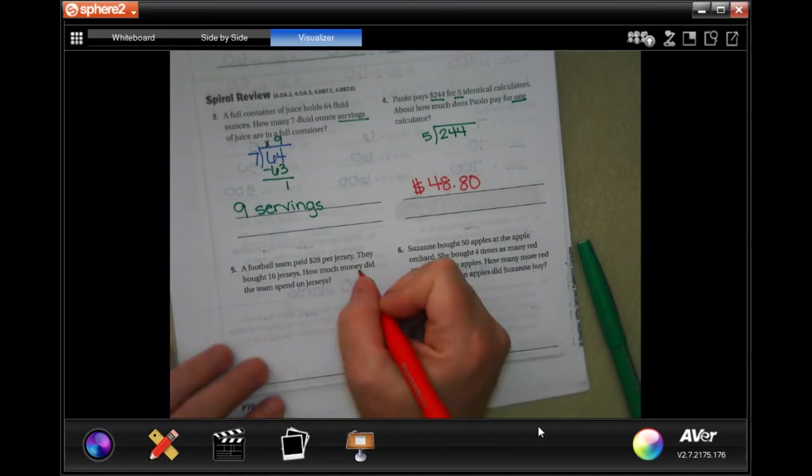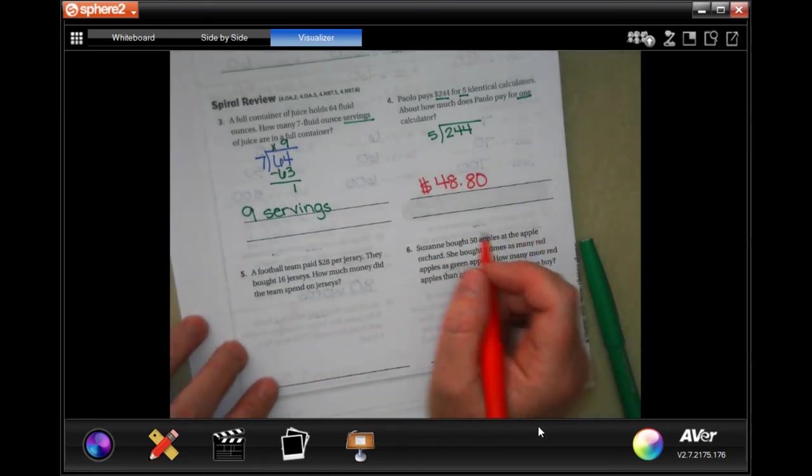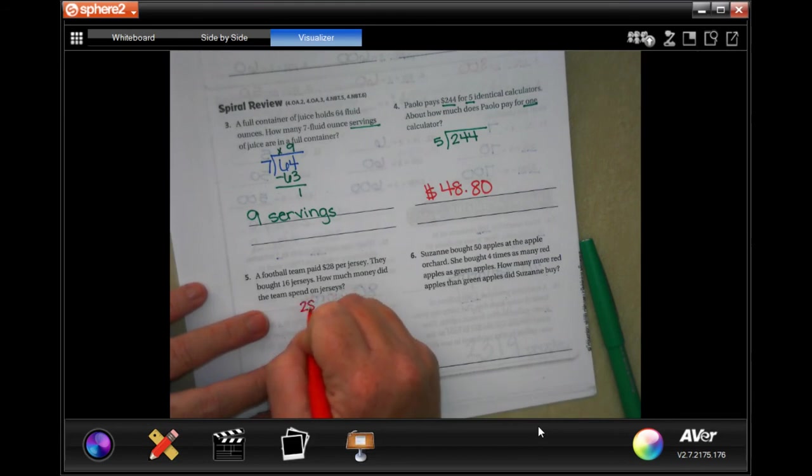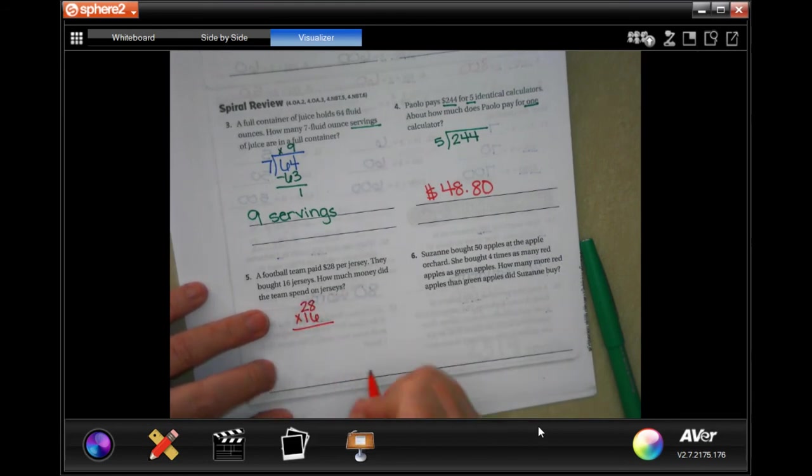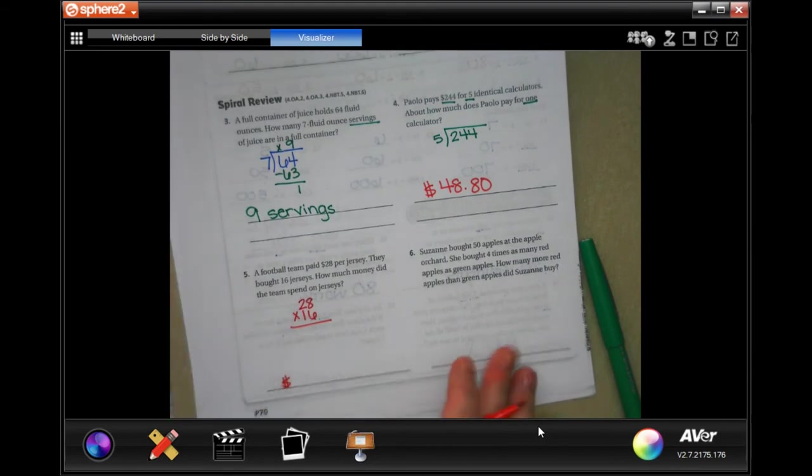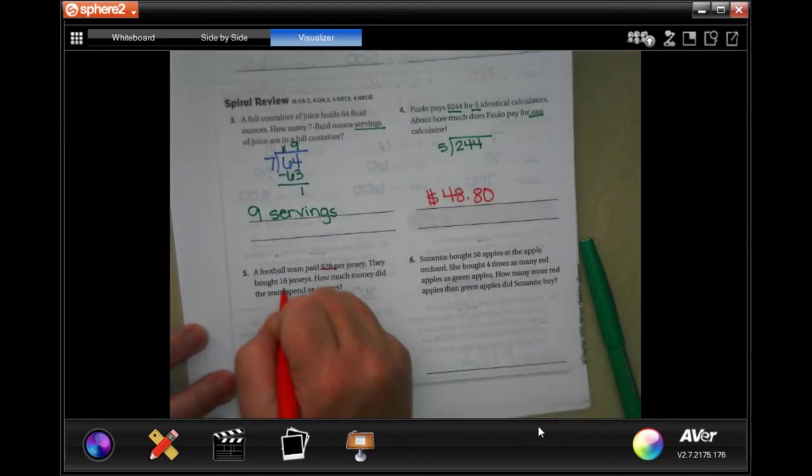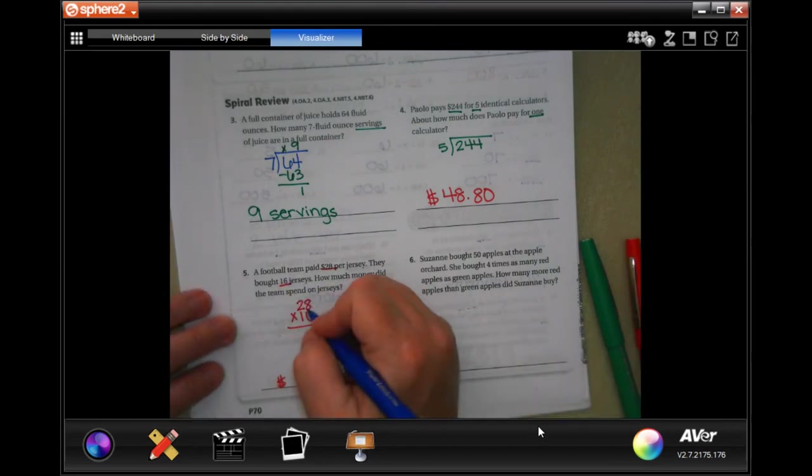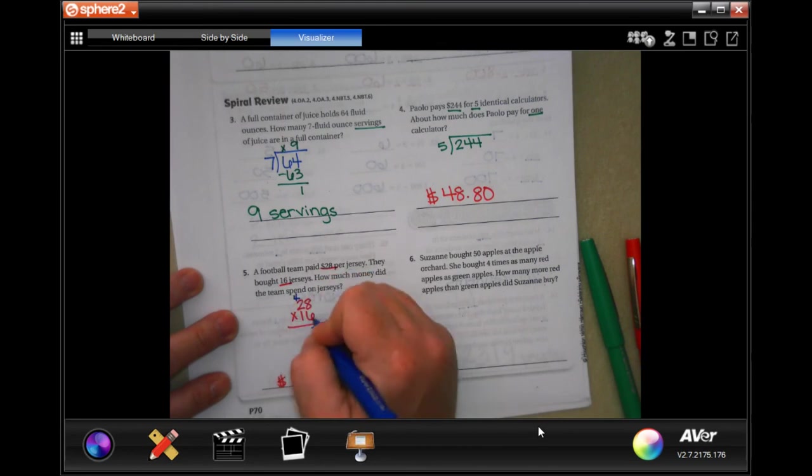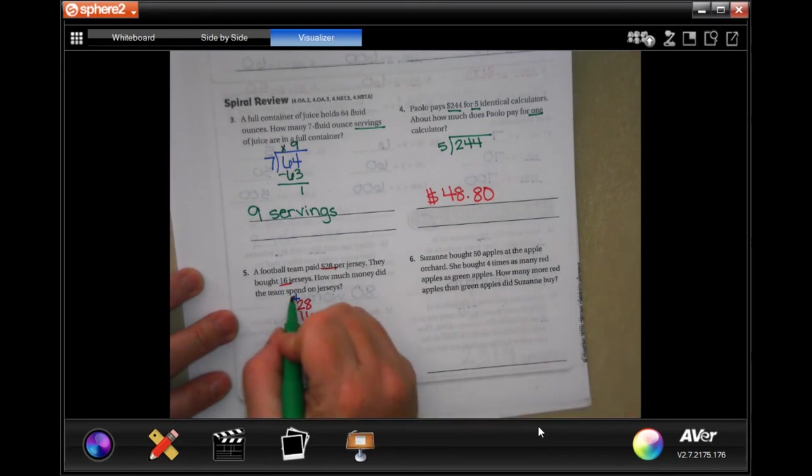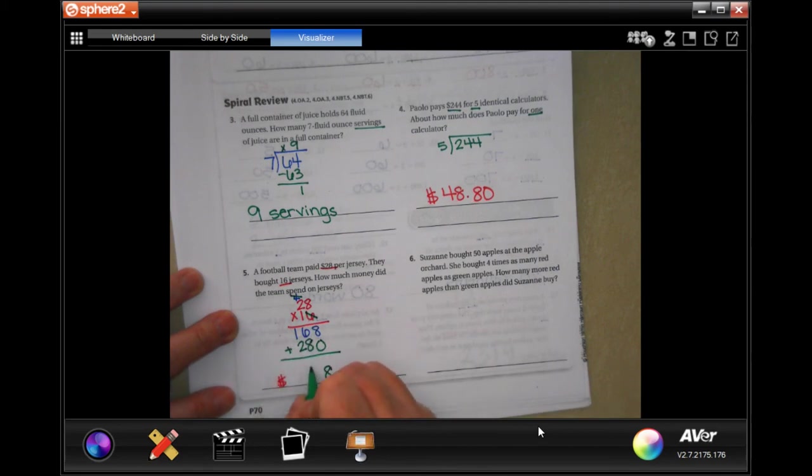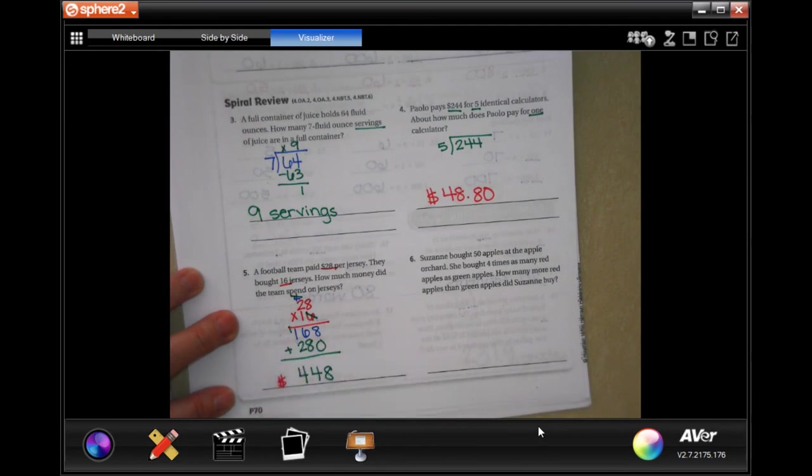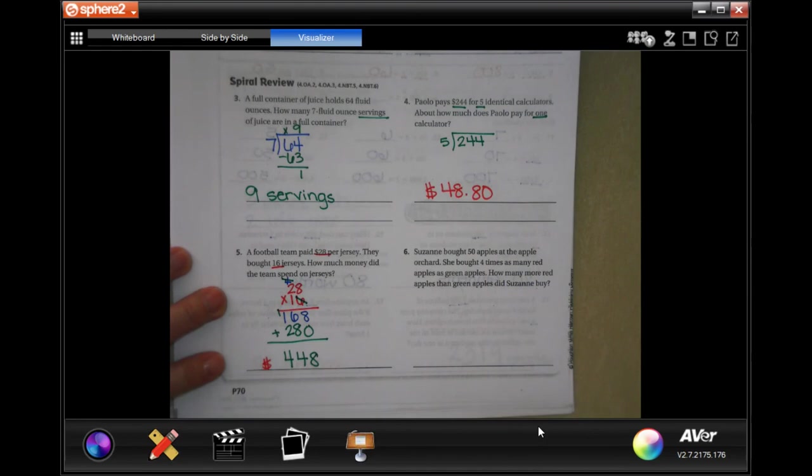A football team bought jerseys for $28 per jersey and they bought 16 jerseys. How much money did they spend? We're going to do 28 times 16 and whatever our answer is it's going to have a dollar sign in front of it. Six times eight is 48, carry the four. Six times two is twelve plus four more, sixteen. Now we're going to go tic tac toe and one times twenty eight is twenty eight, add those two together, gonna get eight, fourteen carry the one and four. So four hundred and forty eight dollars.